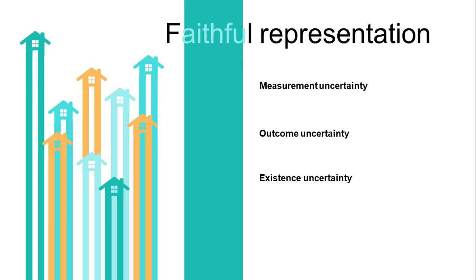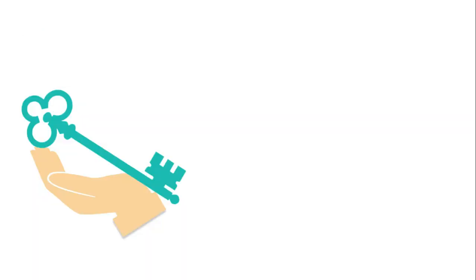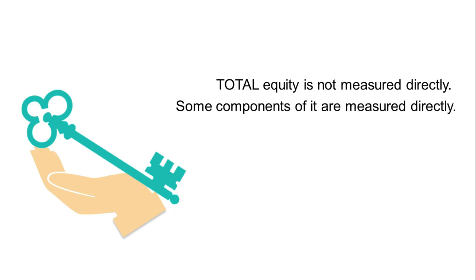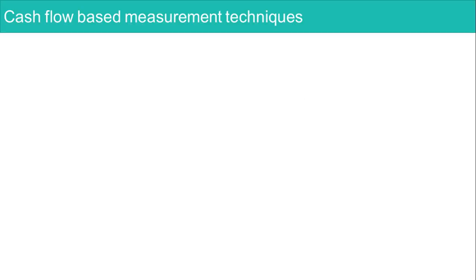So far we have only talked about the measurement of assets and liabilities. What about equity? How is it measured? Total equity is not measured directly because, as we pointed out in Chapter 4, equity is residual. Although total equity is not measured directly, some components of it are measured directly — such as, for example, the total par value of the shares issued and outstanding.